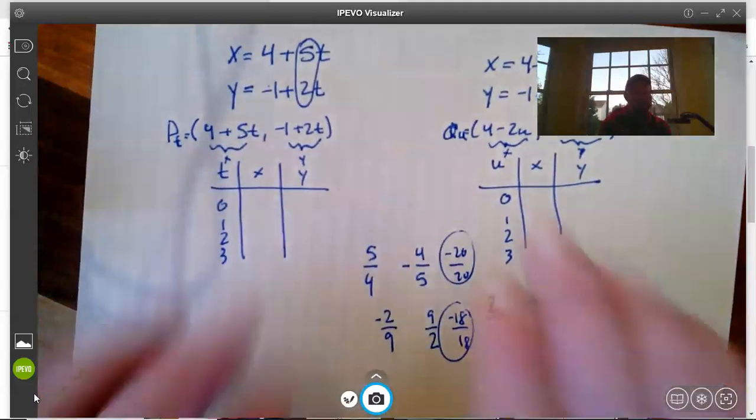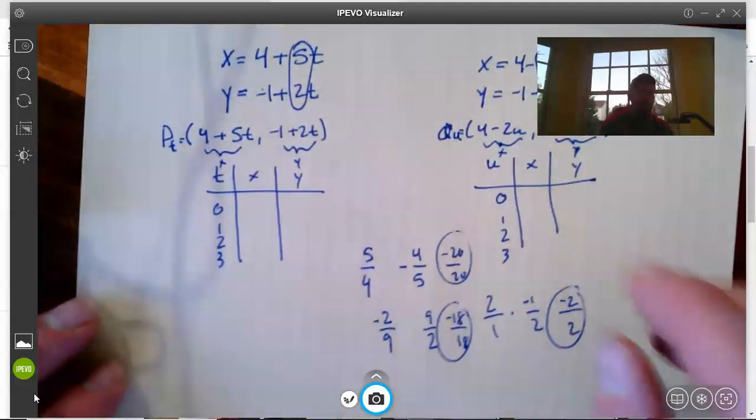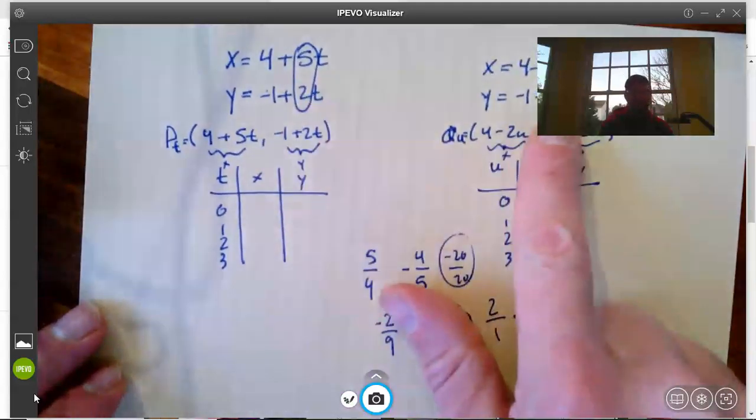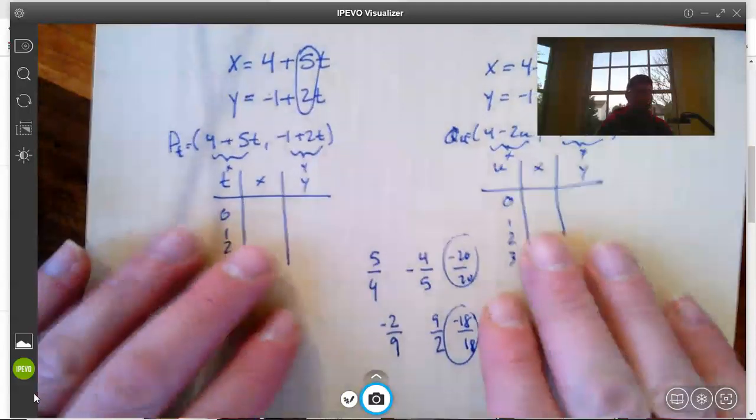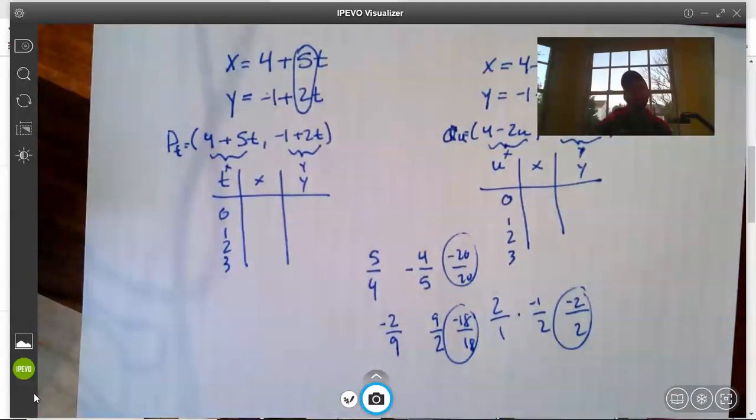So again, make tables, plot points, draw the lines. Think about how do the coefficients relate to the slope of the lines? What are the slopes of the lines? And remember, perpendicular lines have slopes that are negative reciprocals.